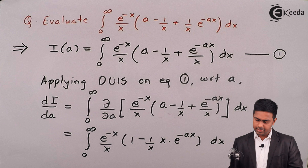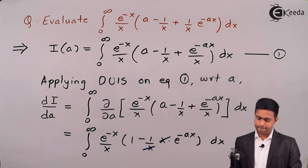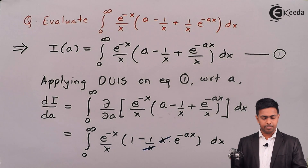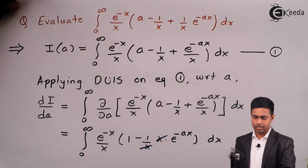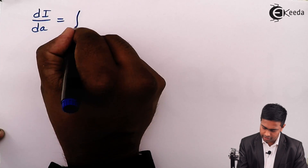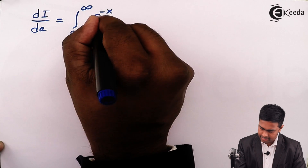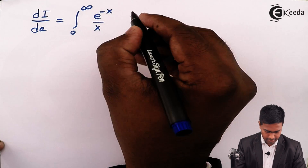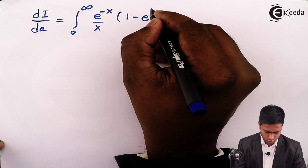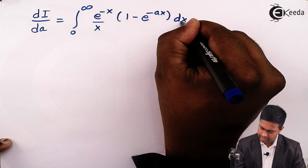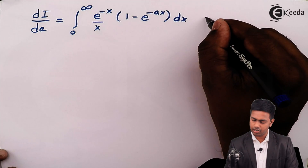Here we can cancel the x terms and get (1 minus e raised to minus ax) in the bracket. So DI by DA equals integration from 0 to infinity of e raised to minus x upon x times (1 minus e raised to minus ax) dx — and this is equation number two.